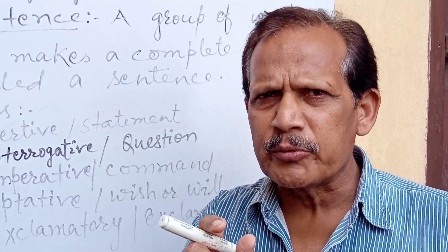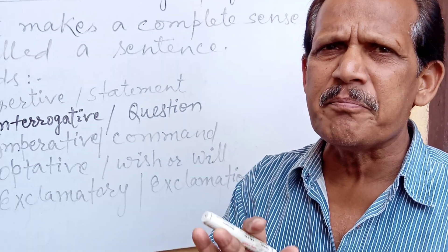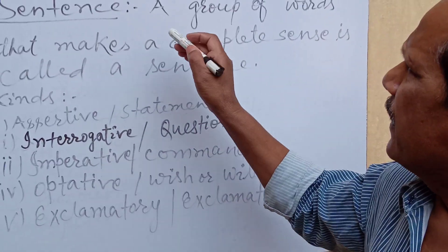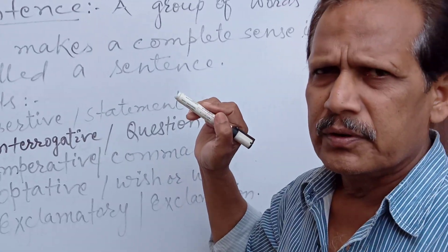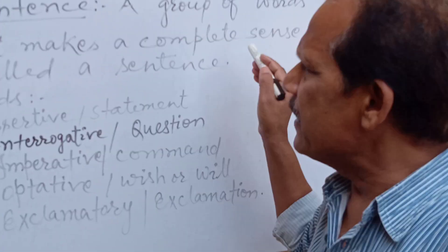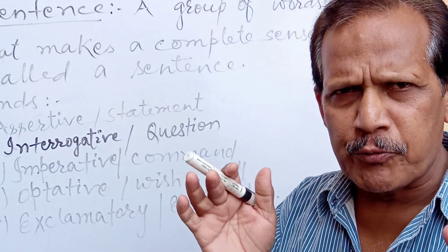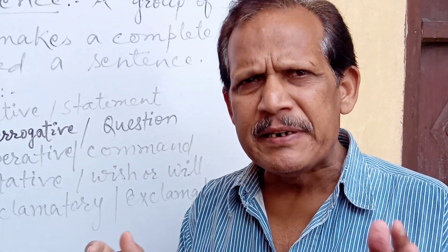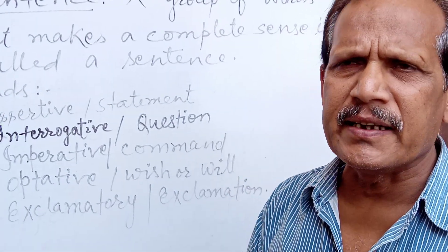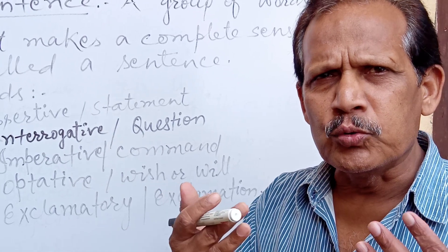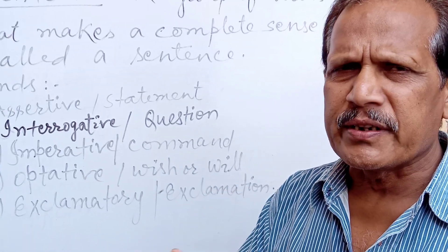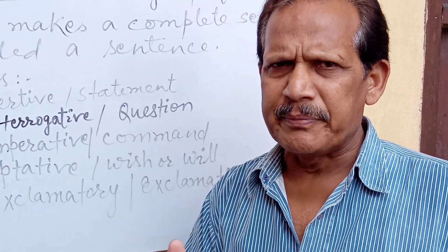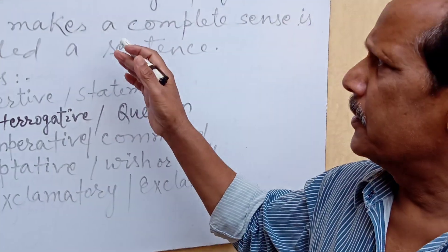Because the sequence of the words has been changed and it doesn't make complete sense. A group of words which makes a complete meaning — a complete sense — is a sentence. 'Ram goes to Patna' is a complete sense; this is a proper sentence.